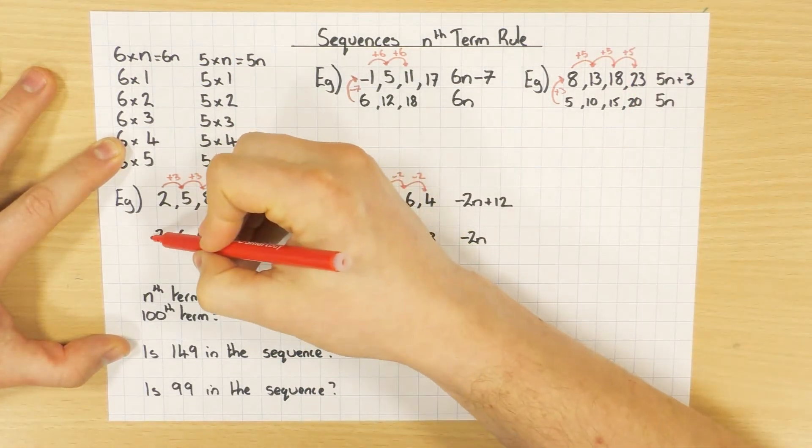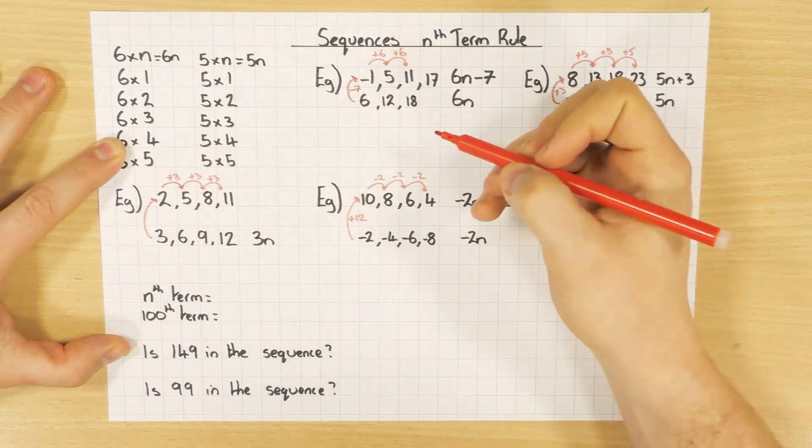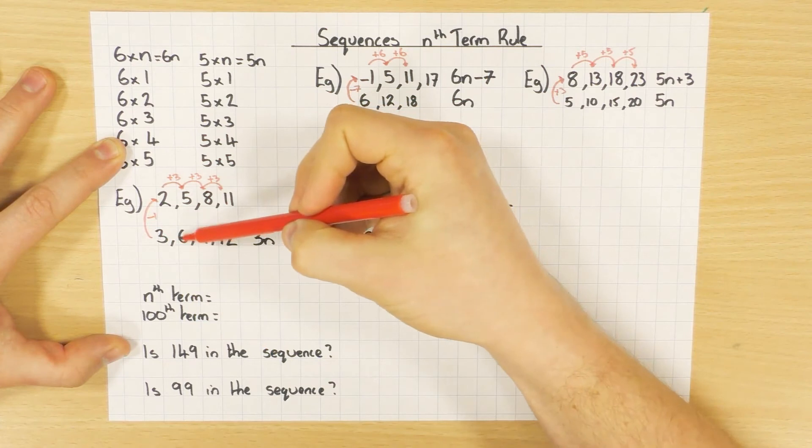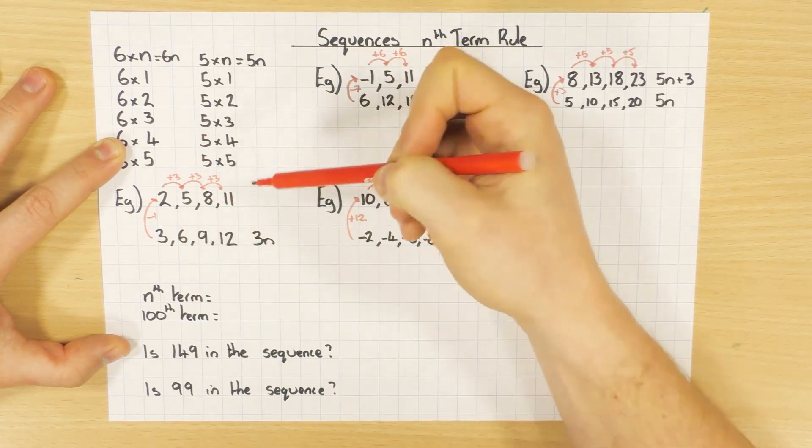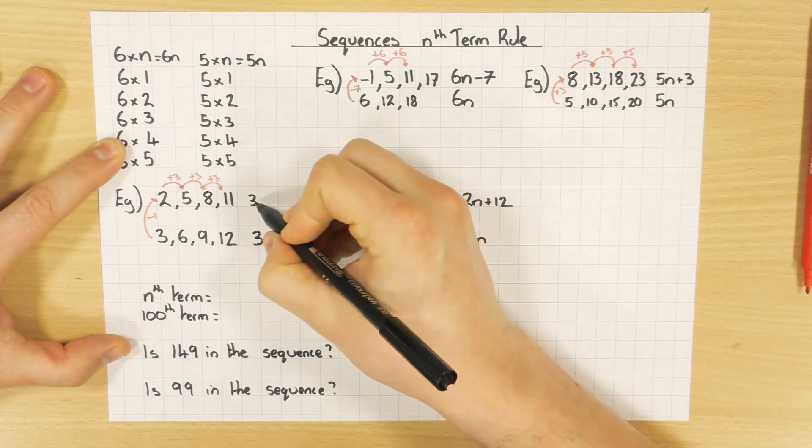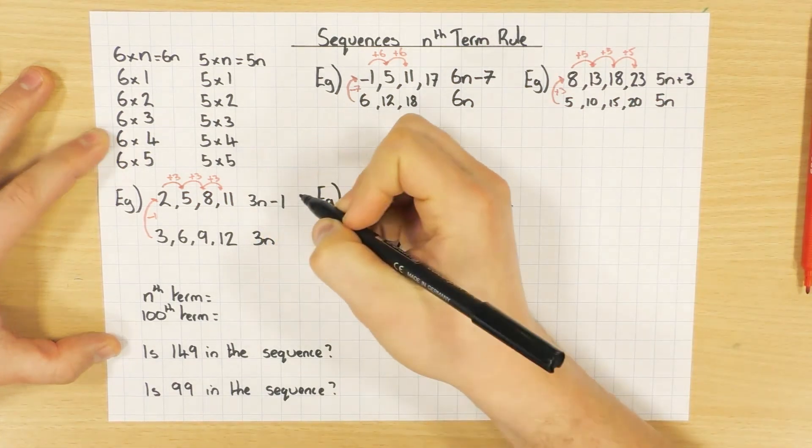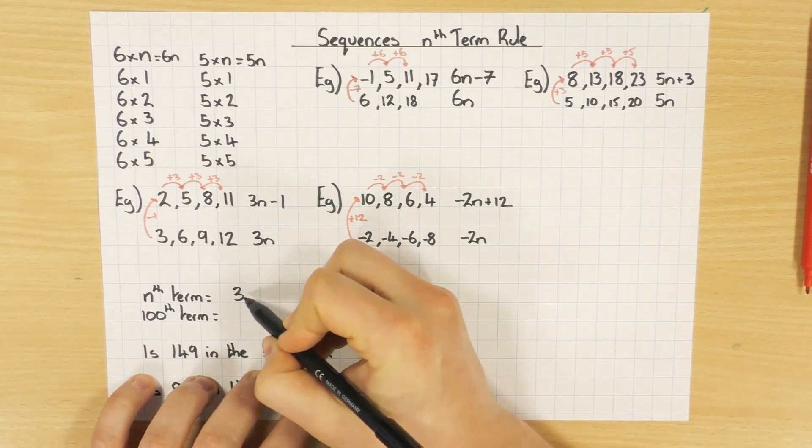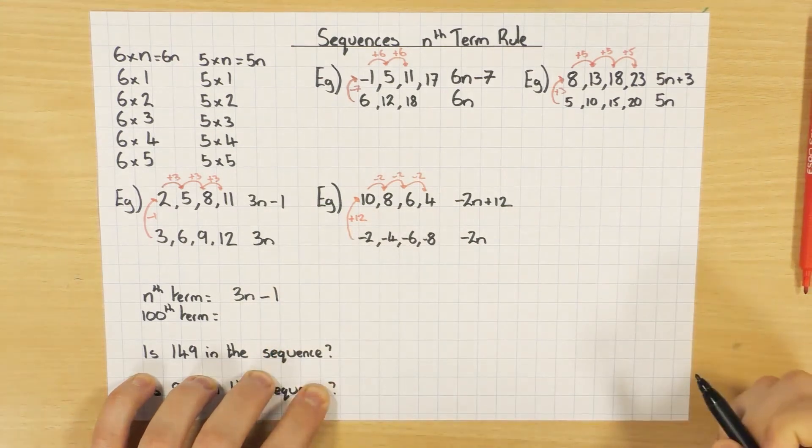How do I go from the 3 times table to my sequence? Well, 3 to 2, I take away 1. Just check it. 6, take away 1. 9, take away 1. 12, take away 1. Yep, it works. So, the nth term rule would be 3n, take away 1. And I'll write that down here as well, that the nth term is 3n, so 3 times table, take away 1.